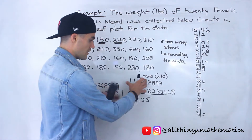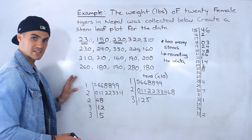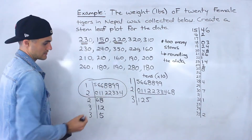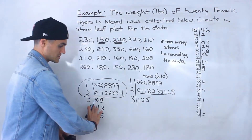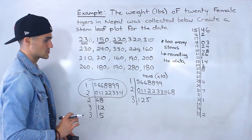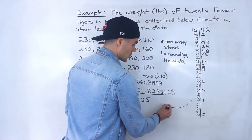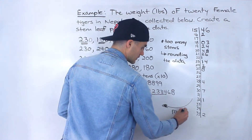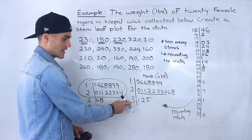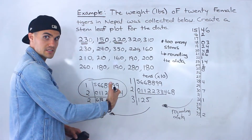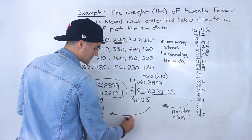Now notice that when we took this stem-leaf plot and split the stems, we have a better observation of what's happening with the data. Notice that most of the data is right there in the middle-upper part. We went from the original spread-out stem-leaf plot, reduced the number of stems by rounding, and then increased the number of stems — not to that many, but roughly double — by splitting the stems.